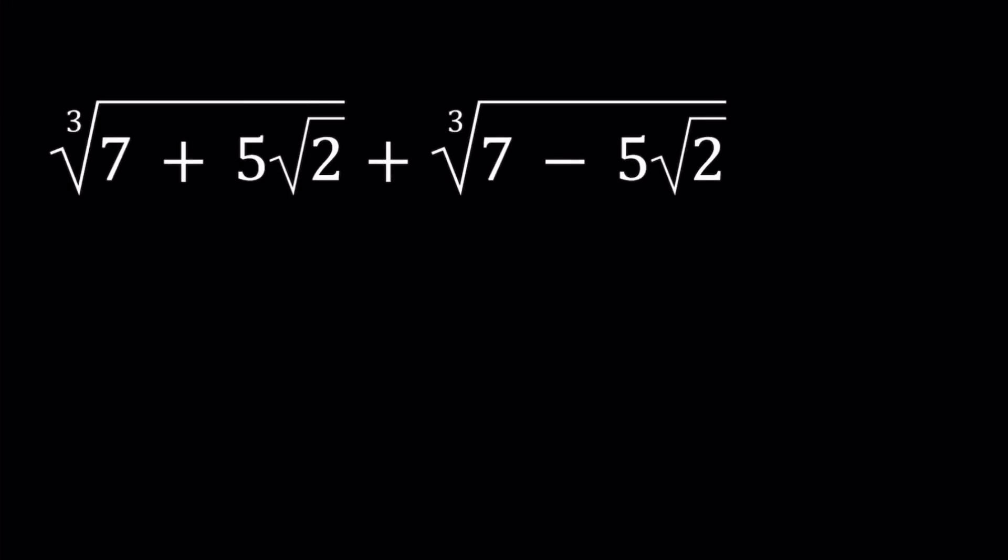Hello everyone. In this video we're going to be simplifying a radical expression with cube roots. We have the cube root of 7 plus 5 times the square root of 2 plus the cube root of 7 minus 5 times the square root of 2, and we're going to be simplifying this expression and finding a much simpler result.